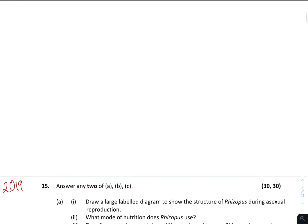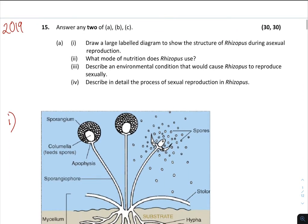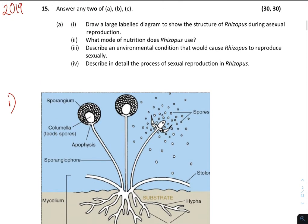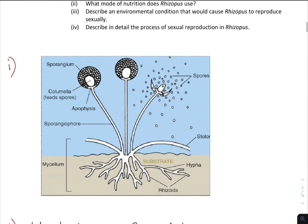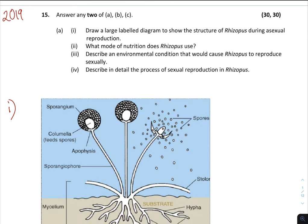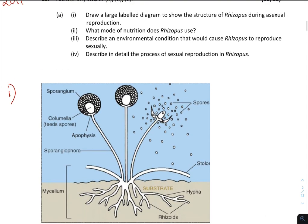So without further ado — 2019 is when this came up last. Question 15a, usually a 30-mark question, and straightaway you're asked to draw a large labeled diagram of Rhizopus during asexual reproduction. They just want a diagram of Rhizopus, and make sure you put in spores for the asexual reproduction part. I didn't draw a diagram because I'm really bad at it, but this is what you should be drawing.